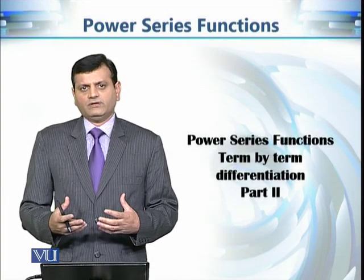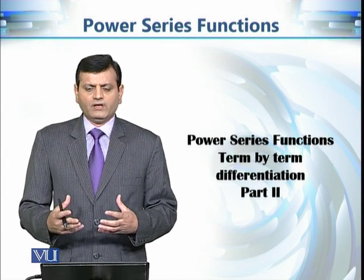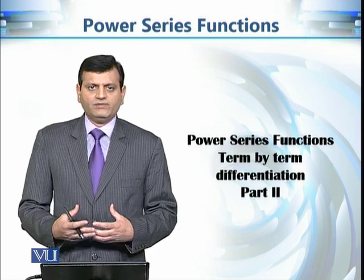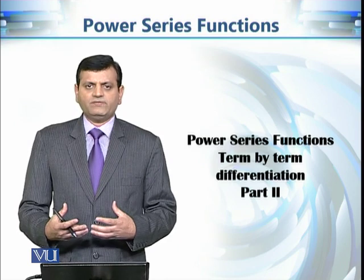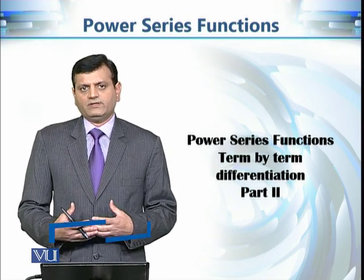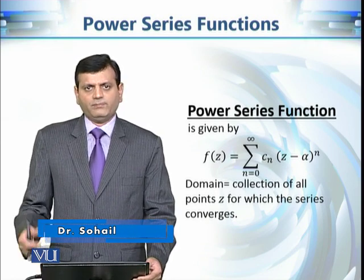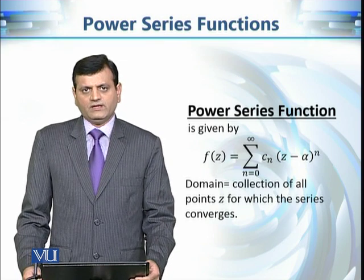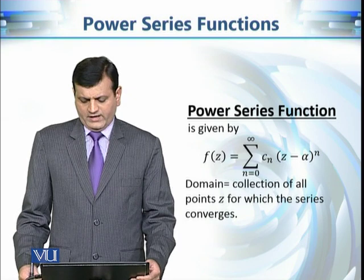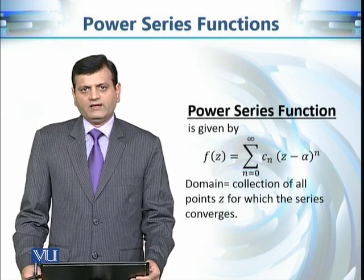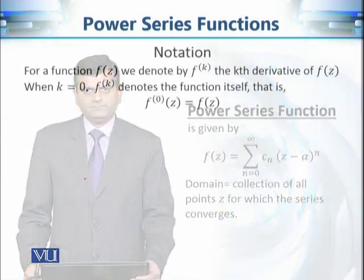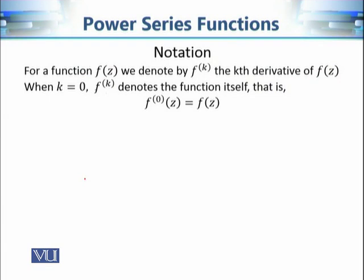This is a continuation of our discussion on the differentiation of power series functions. We are using power series to define functions, and the question is how we can calculate the derivative of these functions. A power series function is an expression of the form f(z) = cₙ(z - α)ⁿ, where n varies from 0 to infinity. Here cₙ and α are fixed complex numbers and z is the complex variable. This function is well-defined when the series converges.